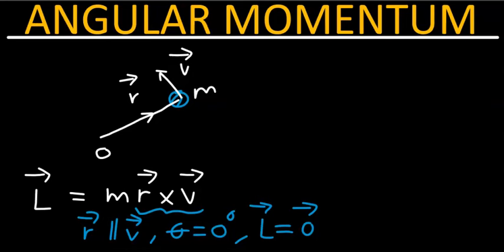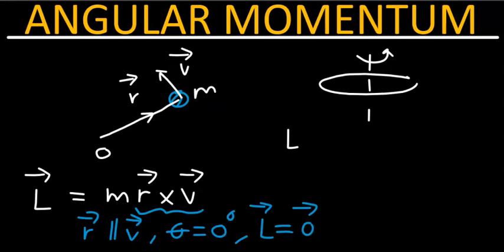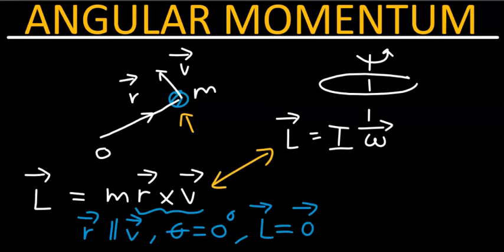If you have a system made up of more than one particle, or a rigid body system such as a wheel spinning about a central axis, then the angular momentum is simply given by the product of the moment of inertia and the angular velocity of that system. For a single particle, these two results can be shown to be the same.